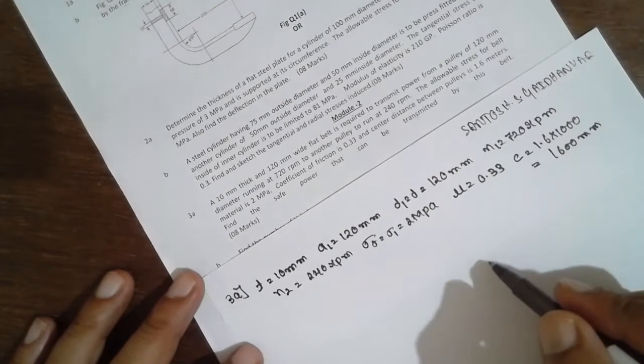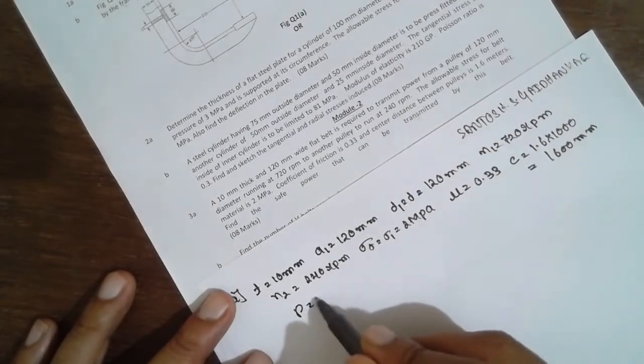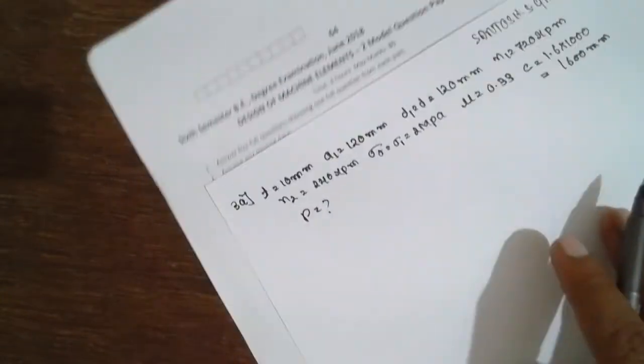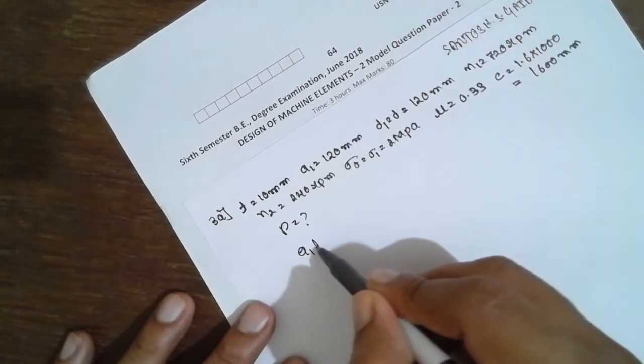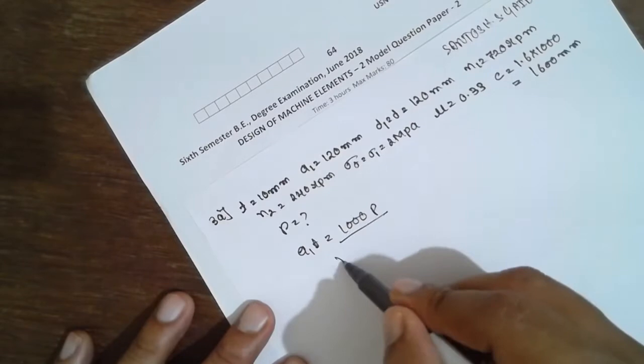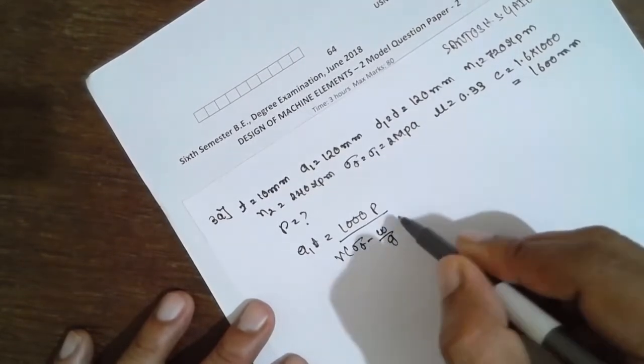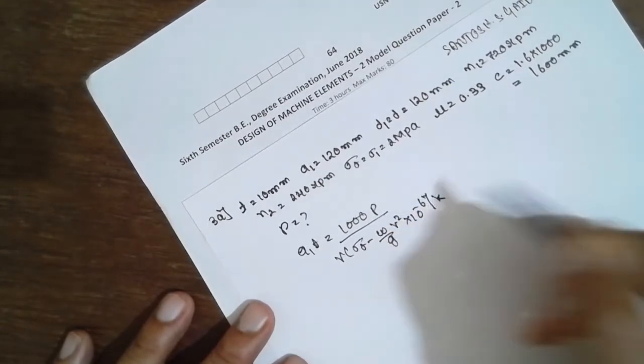Find the safe power that can be transmitted. You have to find out the power. It is very easy. Same formula you can use. The formula from the data book is: A1t = 1000P/(V(sigma_t - (W/g)V² × 10^-6 × k)). This is the formula I am using from the data book.